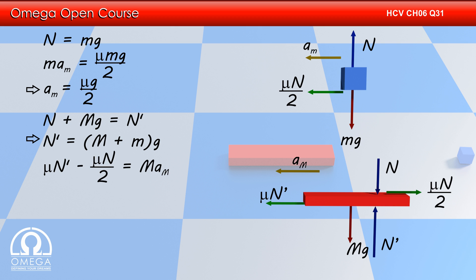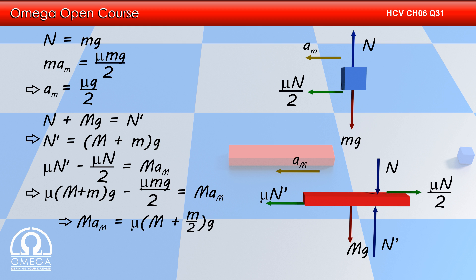For horizontal motion, we have μN' − μmg/2 = M·a_M. Putting the value of N', we get μ(M + m)g − μmg/2 = M·a_M, which implies M·a_M = μ(M + m)g/2, or a_M = μ(M + m)g/(2M). Friction by the floor, whose magnitude is μN', acts in the backward direction.